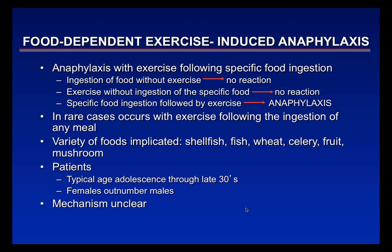Food-dependent exercise-induced anaphylaxis occurs when a patient can eat a food without exercising, or exercise without eating that food, and tolerate both — but combining food ingestion with exercise triggers anaphylaxis. This typically presents as anaphylaxis in someone who ate a meal and then participated in sports. Implicated foods include fish, shellfish, wheat, celery, fruit, and mushrooms. It tends to affect adolescents and young adults, with females outnumbering males, though it can happen to anyone. The mechanism is thought to involve altered absorption.